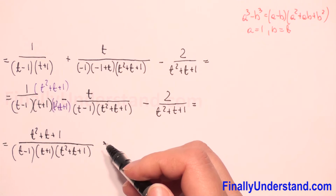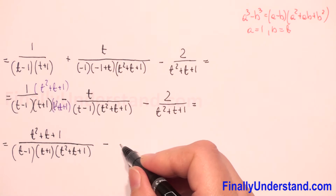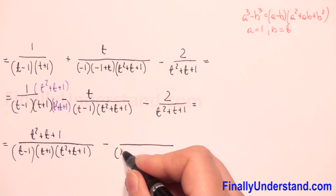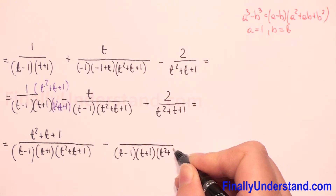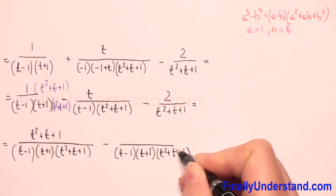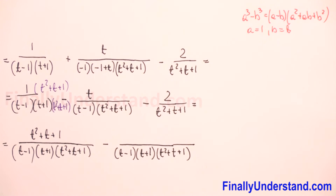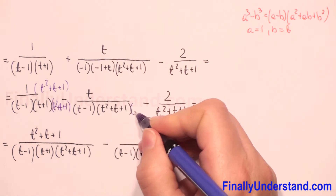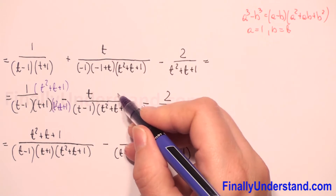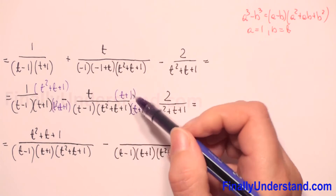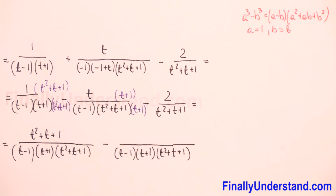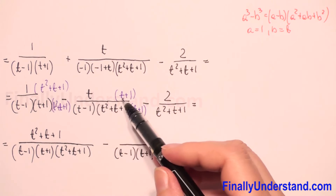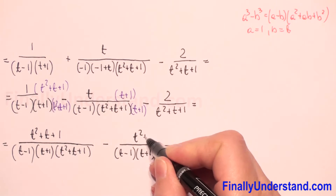Next, the denominator for each fraction must be t minus one times t plus one times t squared plus t plus one. For the second fraction, we have t minus one and t squared plus t plus one, but we don't have t plus one, so we multiply numerator and denominator by t plus one. The numerator becomes t times t plus one, which equals t squared plus t.